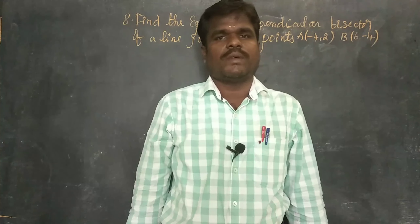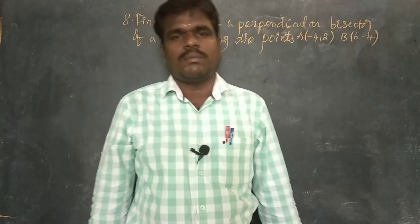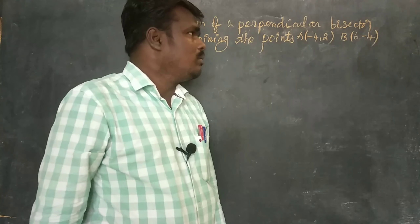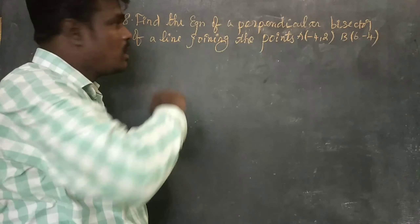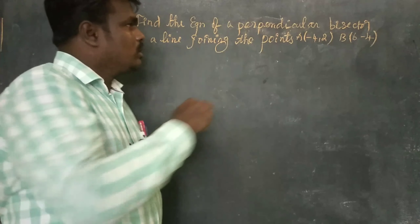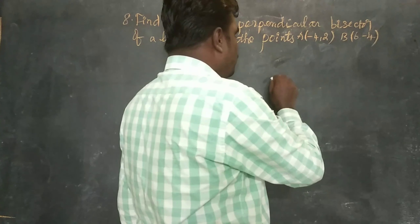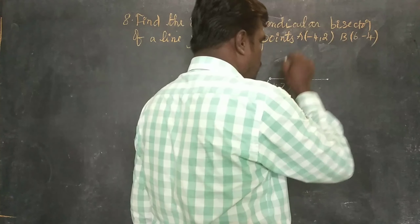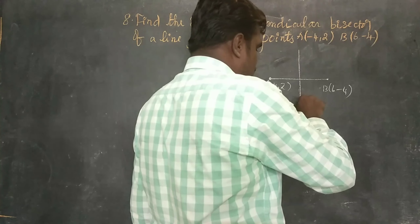Today's topic is Exercise 5.4, Question number 8. Find the equation of the perpendicular bisector of the line joining the points A(-4, 2) and B(6, -4). In the diagram, A(-4, 2) and B(6, -4) are the given points, and CD is the perpendicular bisector.